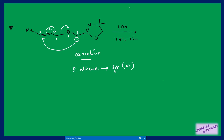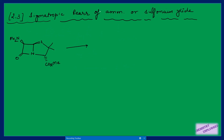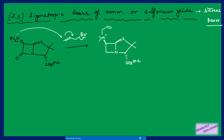Next we cover [2,3]-sigmatropic rearrangement of ammonium or sulfonium ylides, also called Stevens rearrangement. Starting with a nitrogen-containing system and allyl bromide, the nitrogen lone pair attacks the carbon and bromide is removed, giving an ammonium salt. Then a base removes the acidic proton adjacent to nitrogen.